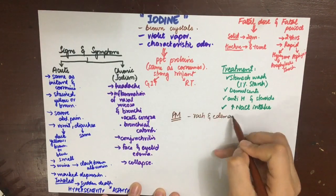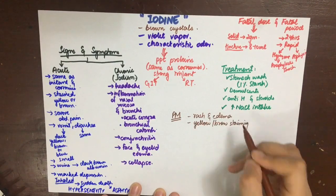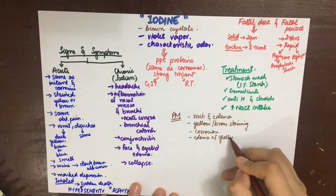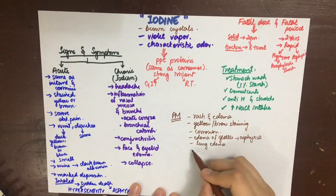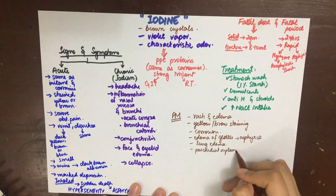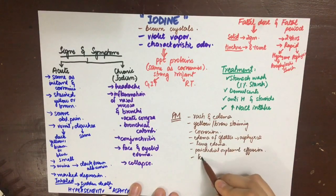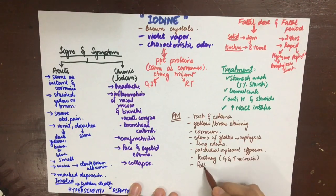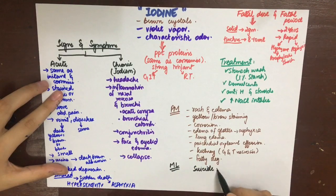In case of death due to iodine poisoning, skin rash and edema can be seen, along with yellow-brown staining of the mouth and corrosion of the GIT mucous membrane. Edema of the glottis leading to asphyxia, edema of the lungs, and effusion to the pericardium and pleura are seen. Kidney glomerular and tubular necrosis is seen, with fatty degeneration in the liver, heart, and lungs.